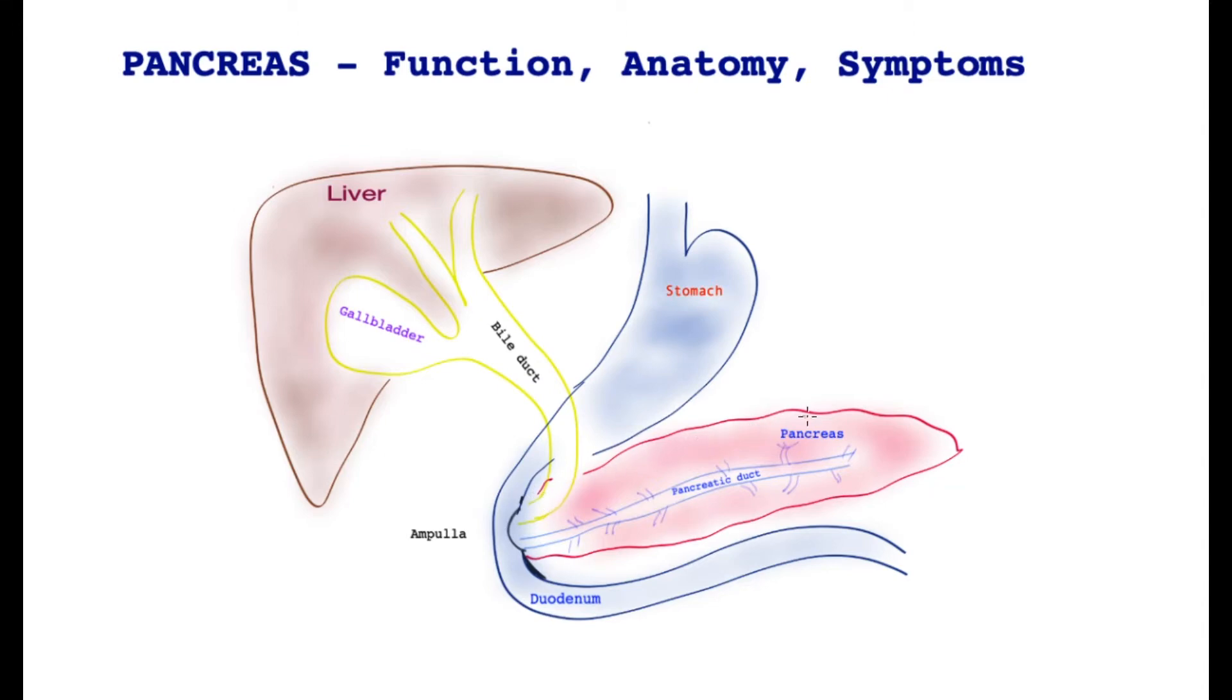Our organ of interest is this flat organ called the pancreas lying behind the stomach, and it has a tube going through its length called the pancreatic tube. One of the main functions of the pancreas is to produce enzymes that digest the food, and these enzymes are carried by this tube towards the duodenum.